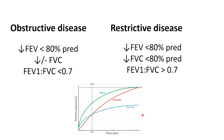In restrictive disease, the FVC is also decreased because the lung volume is much smaller, so the final volume reached is lower. Since both FEV1 and FVC are decreased, we may have an FEV1 to FVC ratio that remains the same and therefore might be greater than 0.7 — unlike obstructive disease.